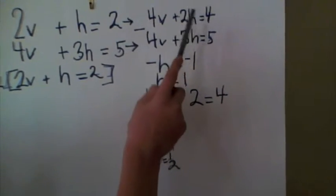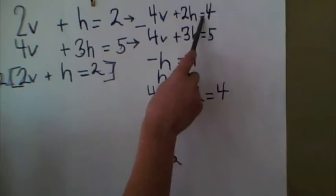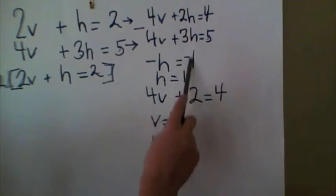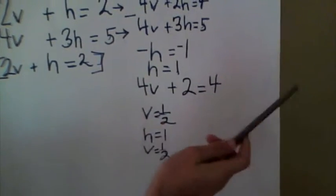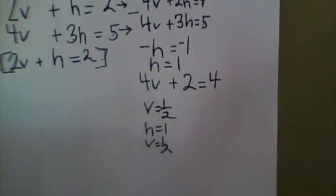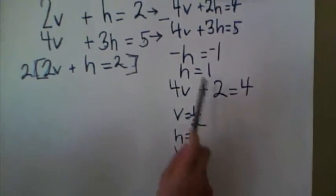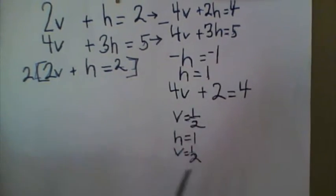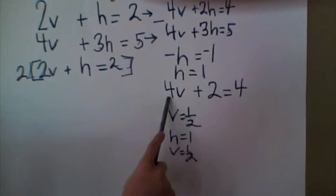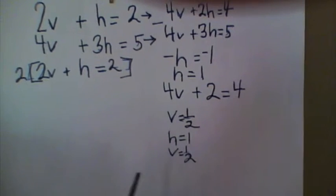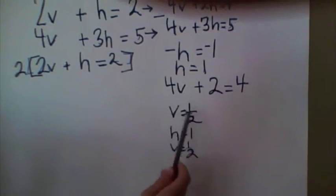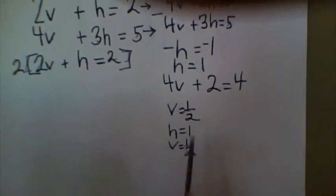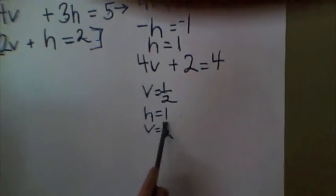And so, you're left with 2h equals 4 and 3h equals 5. So, you subtract them, and you get negative 1h equals negative 1, or in other words, h equals 1. And then, you have to put h again into the original equation. So, you have 4v plus 2 equals 4. And so, when you solve that equation, you get v equals 1 half. So, you have h equals 1, and v equals 1 half.